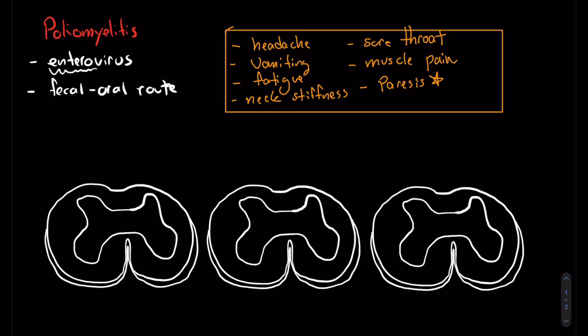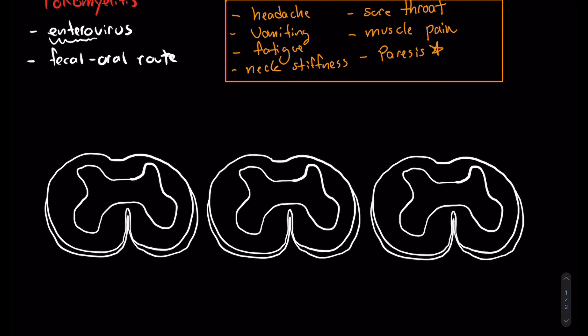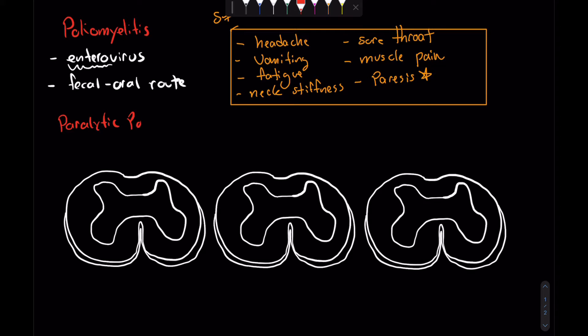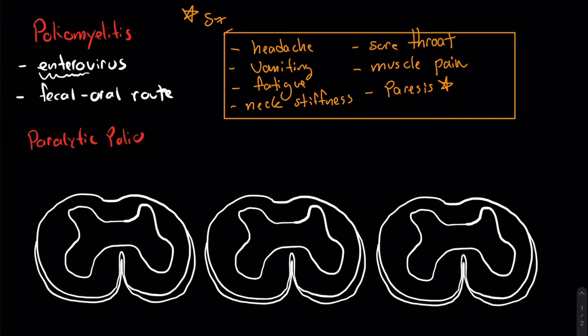So now let's look at the paralytic form. In 99% of the cases, you would get these symptoms here in orange without any repercussions, like I said. But in some cases, around 1% of infections, you can have this form of polio which is paralytic. Typically what happens is during the first 10 days, you would get these symptoms that I mentioned earlier, but you would also get decreased motor function.